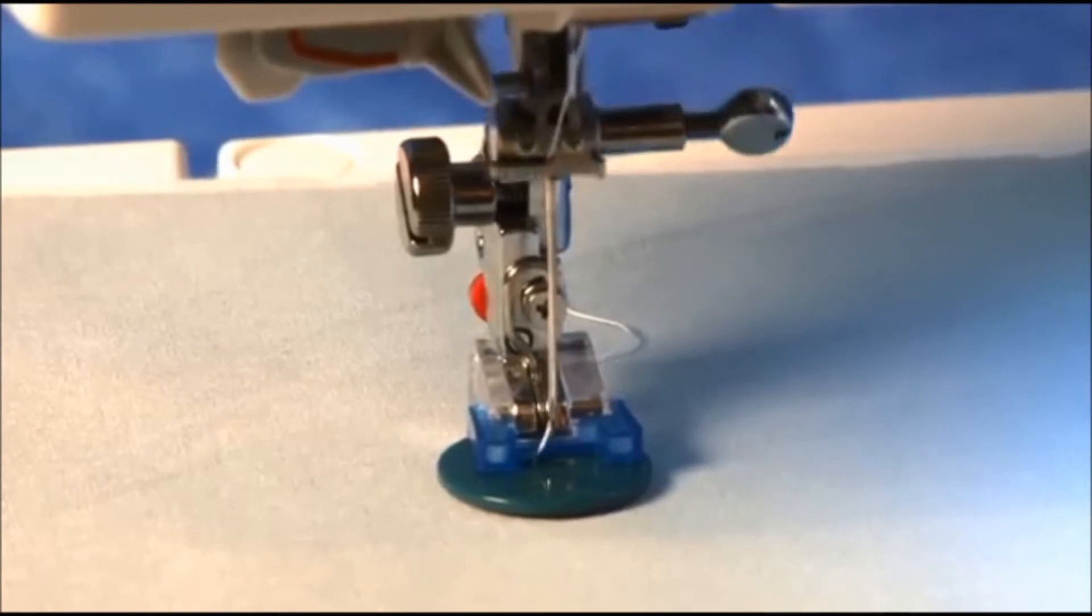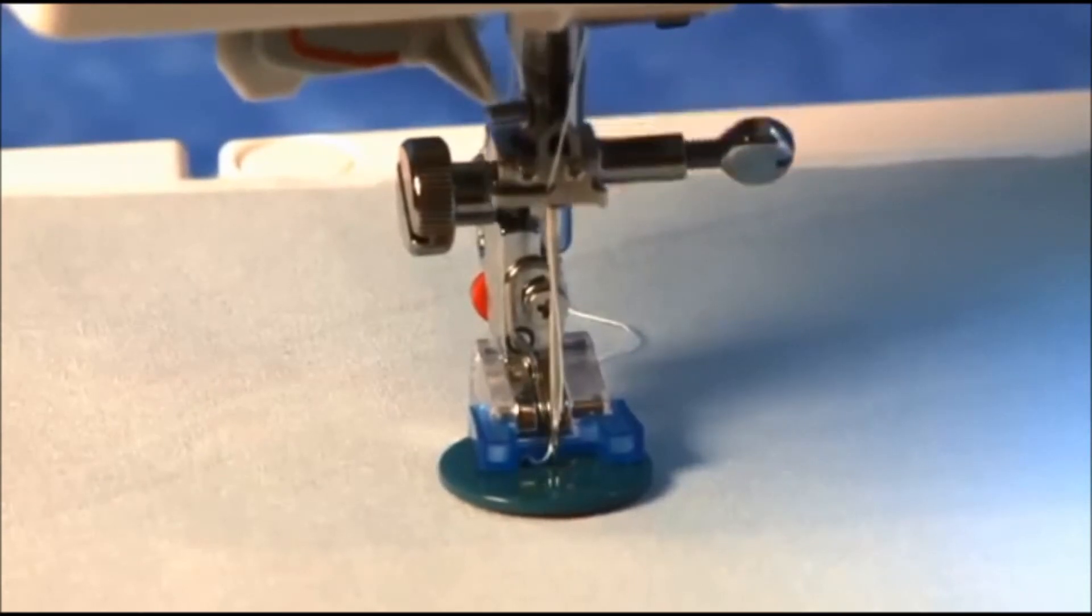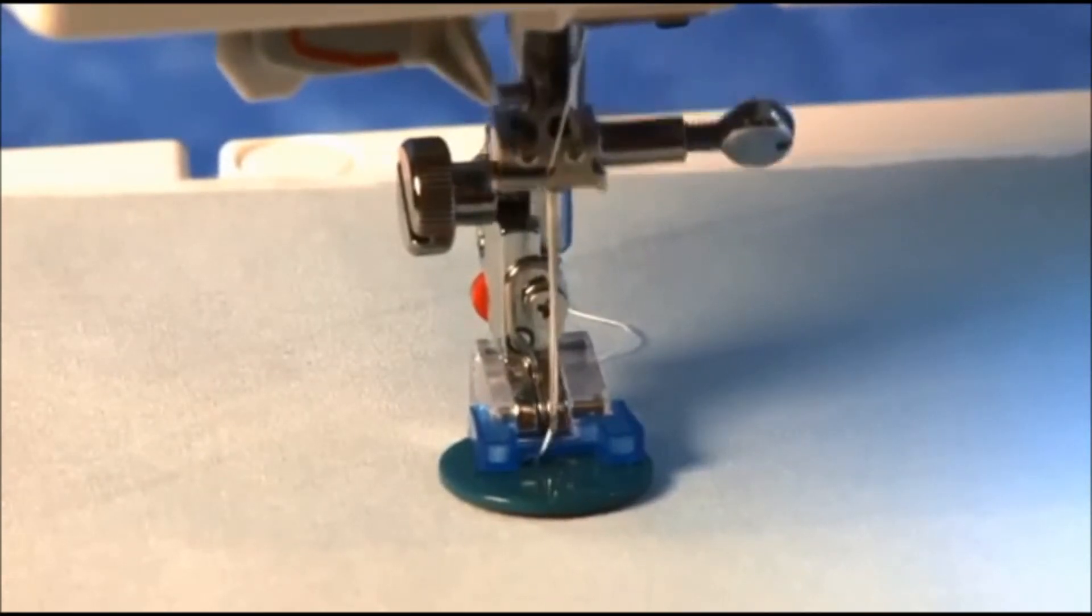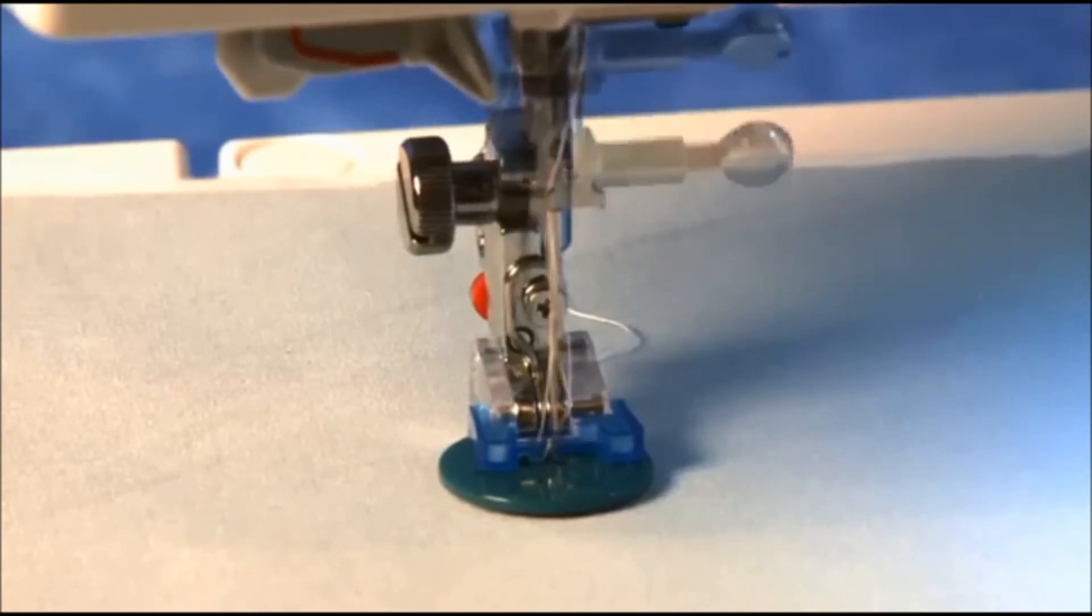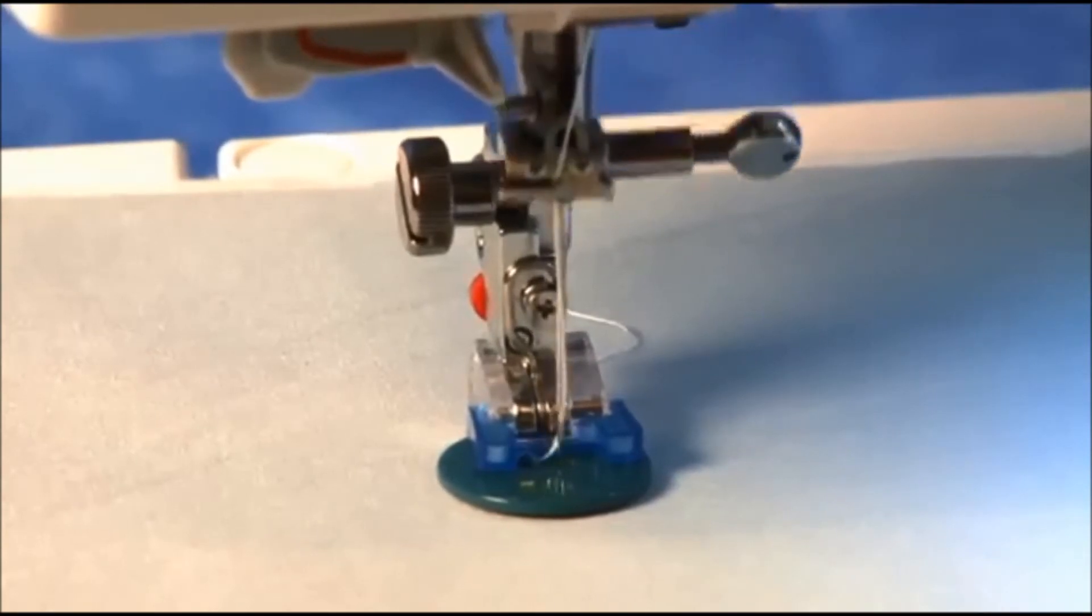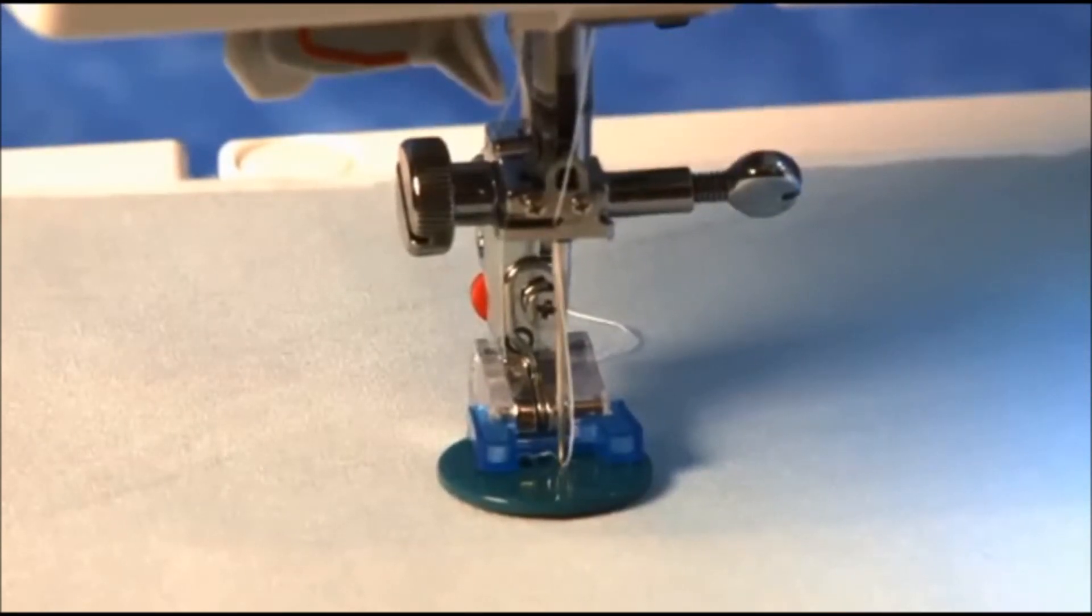To check this, use the hand wheel on the machine to lower the needle. Continue turning the hand wheel until the needle goes up and comes down in the right hole. Adjust the width of your stitch so the needle comes down in the center of the hole.